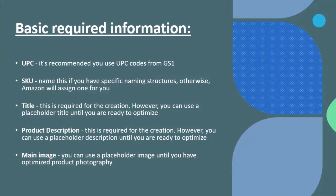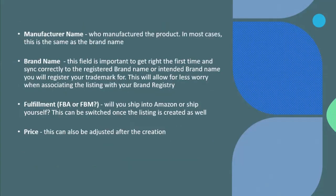For the main image, you can use a placeholder image until you have optimized product photography. Then enter the manufacturer name - the person or company that made your product. It is possible for the brand name and manufacturer name to be the same. Then enter your brand name.